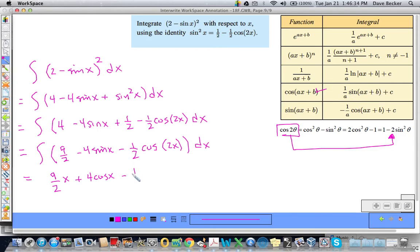And I already have this minus 1 half times my 1 over A. A is 2. So that's 1 over 2 times the sine of 2X. So that's 1 over AX plus C. And I clean that up a little bit and I get 9 halves X plus 4 cosine X minus 1 fourth sine 2X plus C. That is it. I'm out of here. I've done all the damage I can do. Good night and good luck.